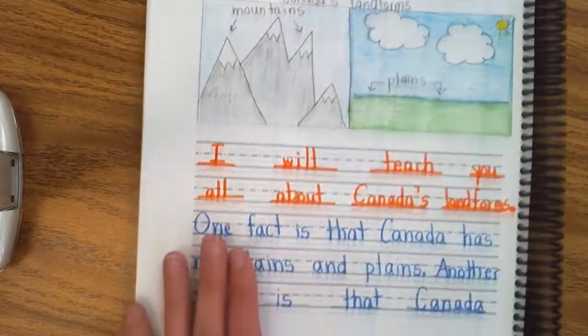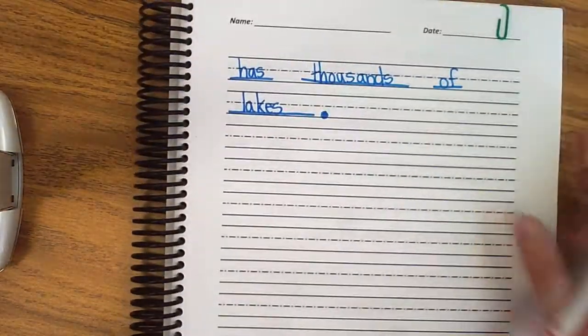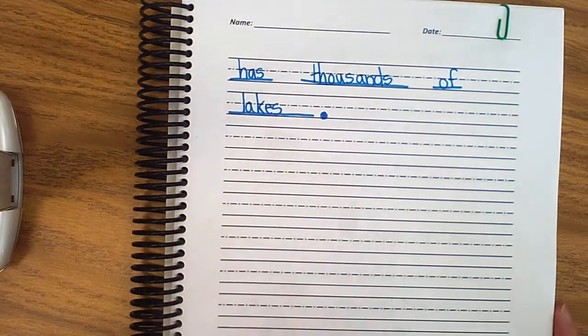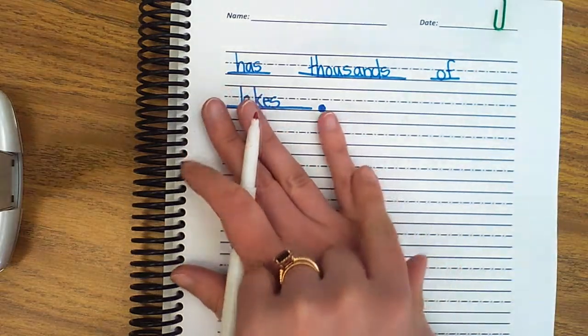Mountains, plains. Another fact is that Canada has thousands of lakes. Friends, I taught them my two facts. Now I'm done. Now I can wrap it up.